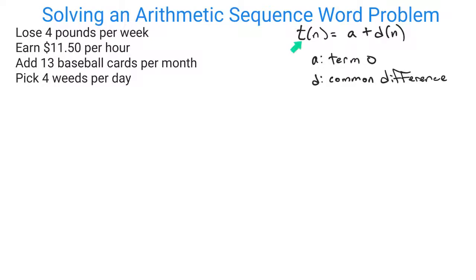That's where this general formula comes from: T(N) = A + D×N, where N is the term number. A is term zero, and D is what we call the common difference - what you're changing by every single time.